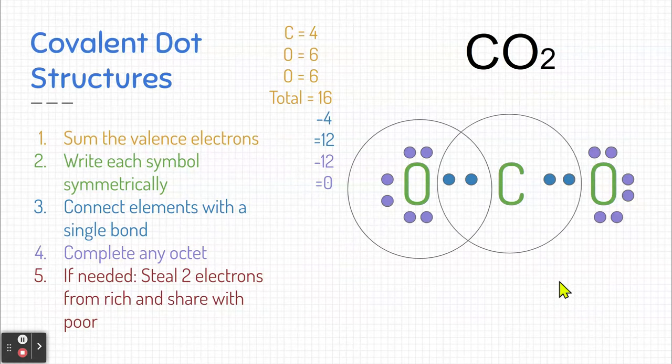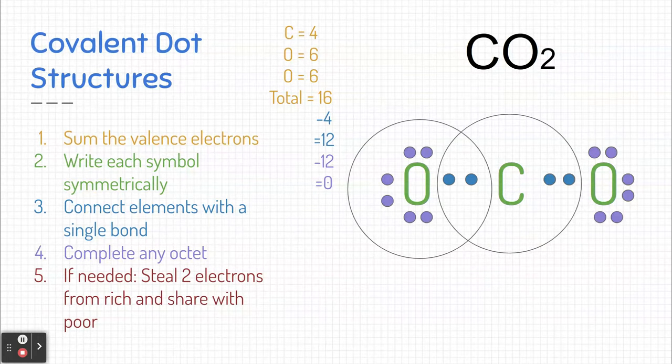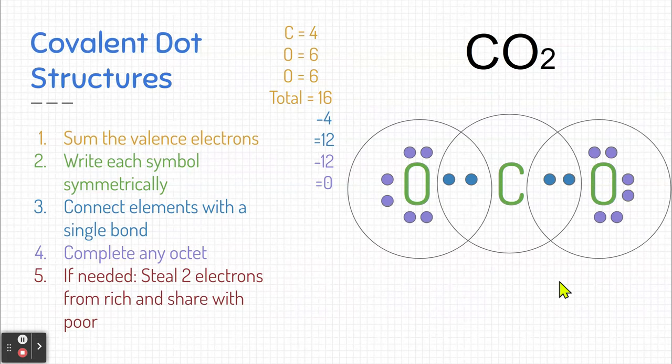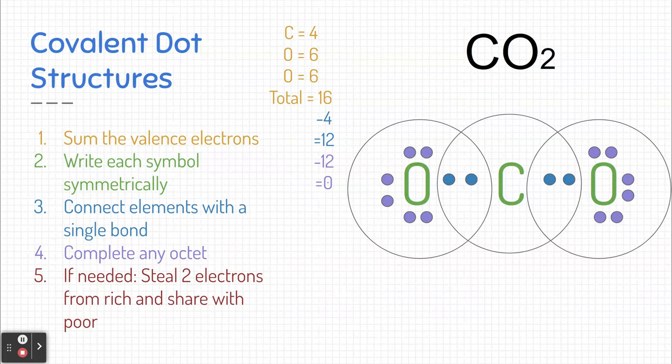If we take a look at carbon, including all of the elements that it's sharing with the two oxygens, carbon has not completed its octet. It does not have a full outer shell. So we're going to need to go to step five. But before we do that, let's check oxygen. The other oxygen on the other side, because it remains symmetrical, is the same as the first oxygen. It has completed its octet.